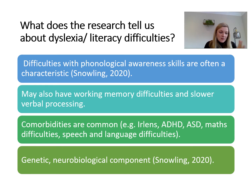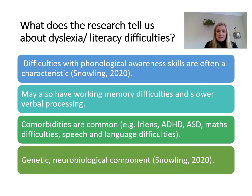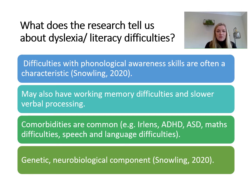When a child has literacy difficulties, often as a byproduct, the child may also have more difficulty with working memory and slower verbal processing skills. Comorbidities are common — a child with literacy difficulties may also have Irlen syndrome, a visual disturbance where words appear to jump around on the page. They may also co-occur with ADHD, autistic spectrum disorder, maths difficulties, and speech and language difficulties. There is also some kind of genetic or neurobiological component, as literacy difficulties so often run in families.